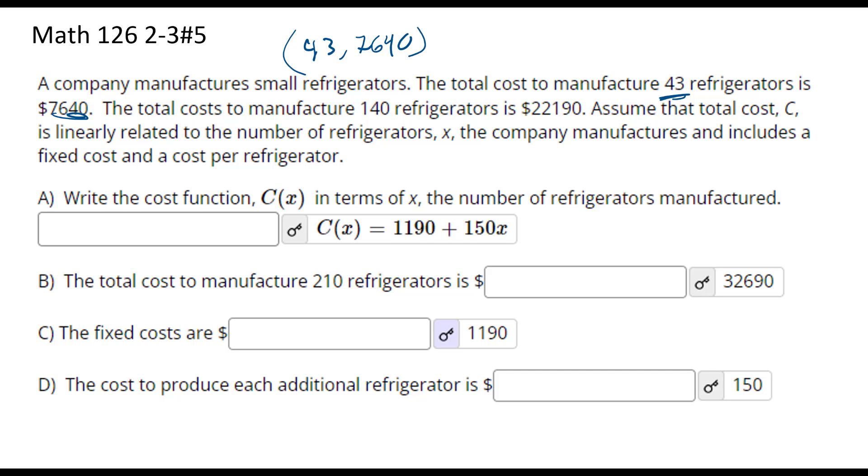The total cost to manufacture 140 refrigerators is $22,190. So 140 refrigerators costs $22,190. There's our ordered pairs.